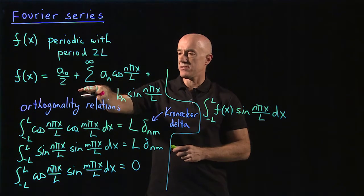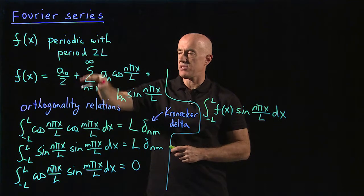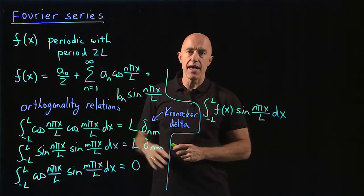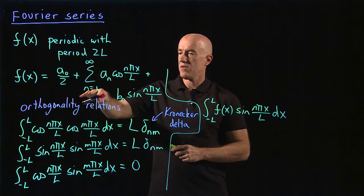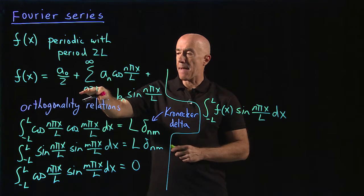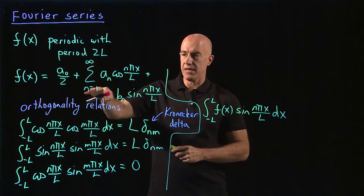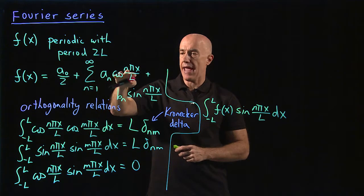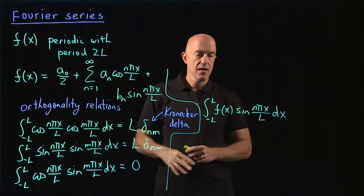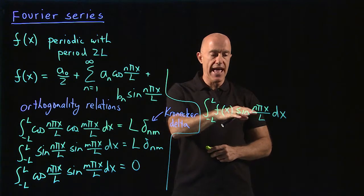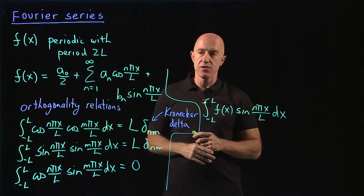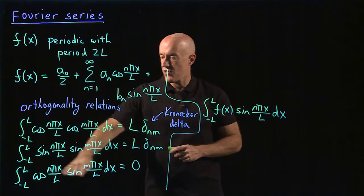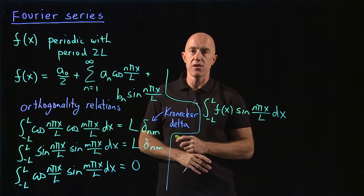If we multiply this cosine by a sine, we would have to change this dummy variable in the summation. Instead of saying from n equals 1 to infinity, we would have to choose m equal 1 to infinity. And then this would be a sub m cosine m pi x over l. If we multiply by sine n pi x over l and integrate dx, then this third orthogonality relation would give us 0.